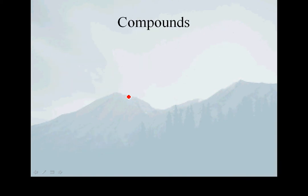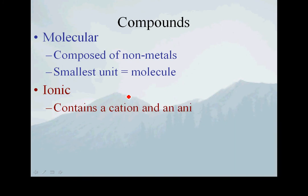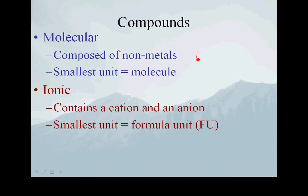There are two broad categories of compounds, and the naming of compounds is a function of which category it falls under. The first group is molecular compounds, which are composed completely of non-metals — everybody to the right of the stair step. So nitrogen and oxygen, or carbon and fluorine, or carbon and chlorine — those are all molecular compounds.